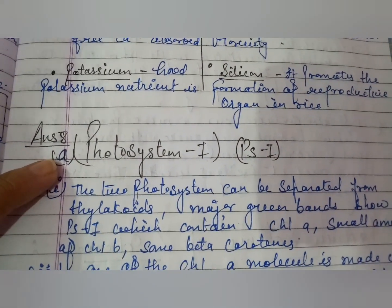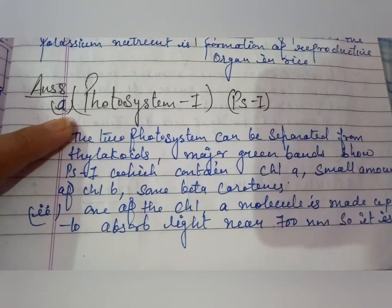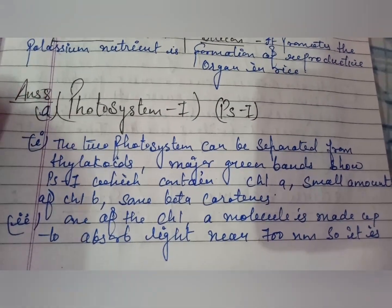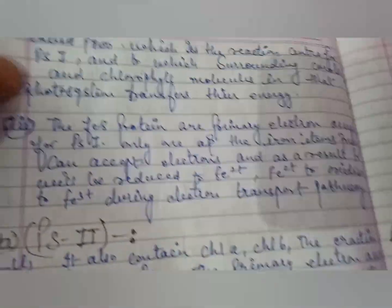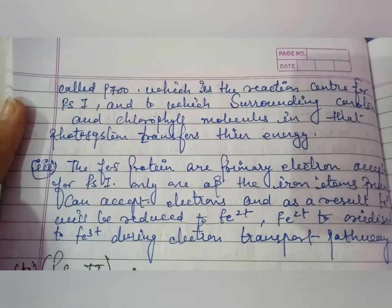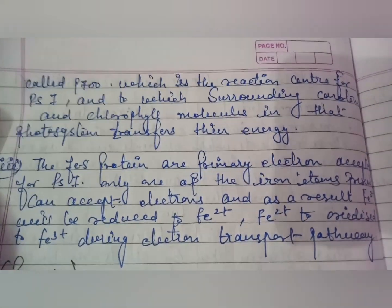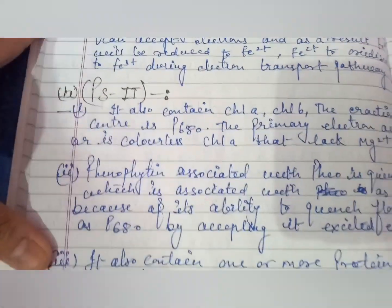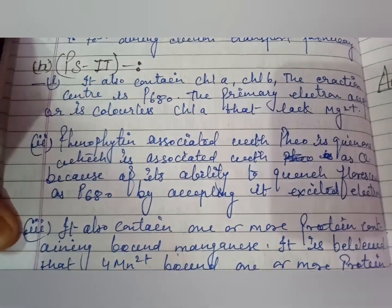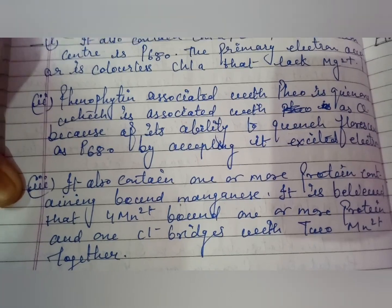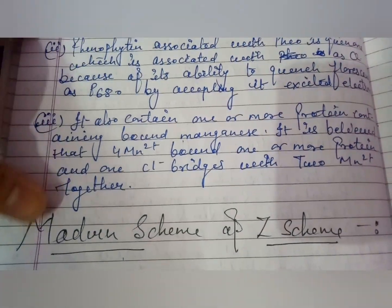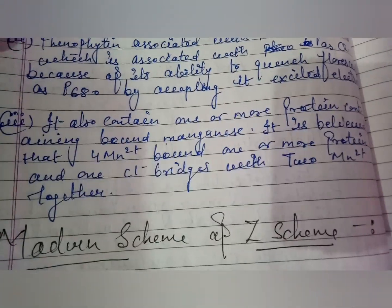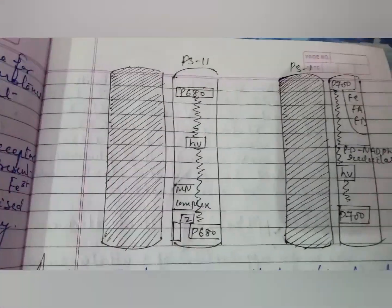Answer eight covers Photosystem 1 and Photosystem 2, including the Z-scheme diagram of PS1 and PS2.